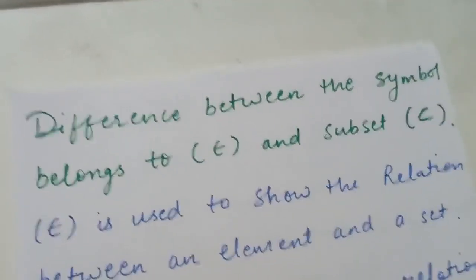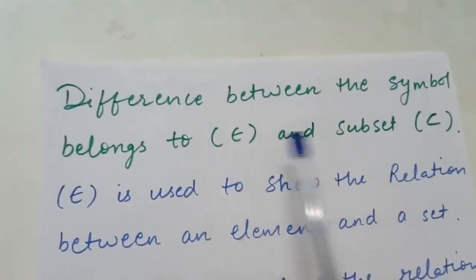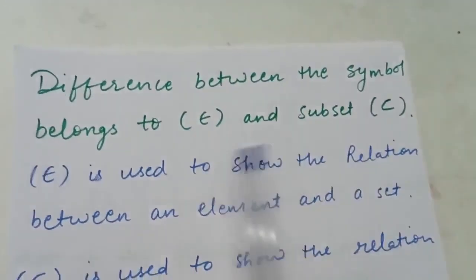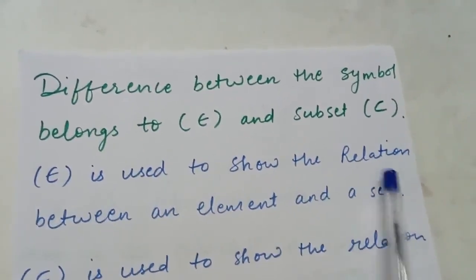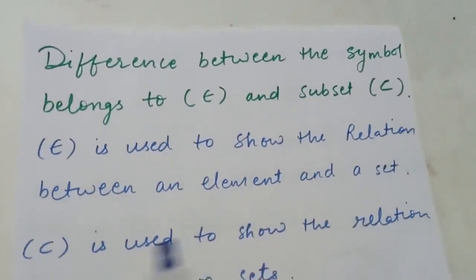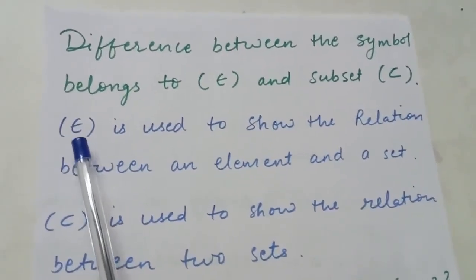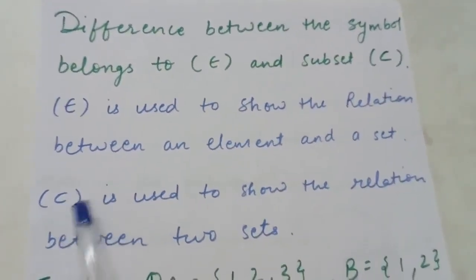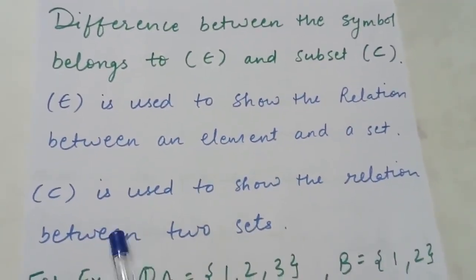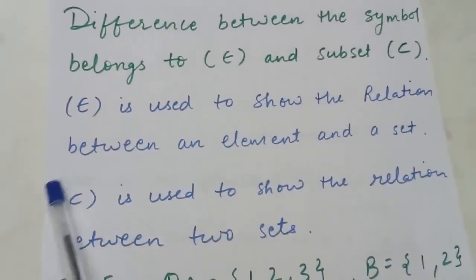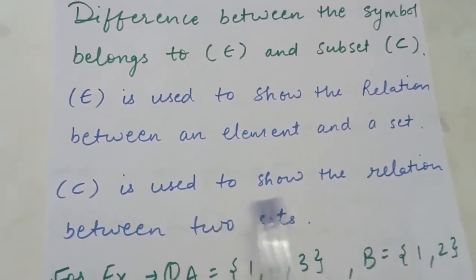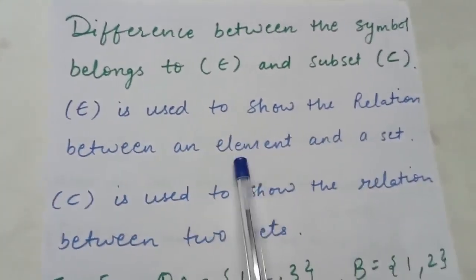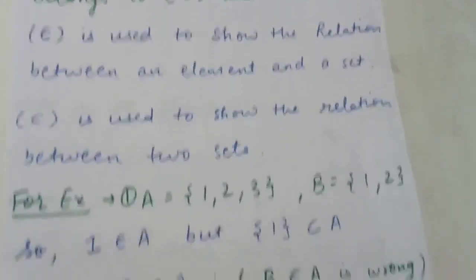Next is the difference between the symbol 'belongs to' (∈) and 'subset' (⊆). 'Belongs to' is used to show the relation between an element and a set. 'Subset' is used to show the relation between two sets.